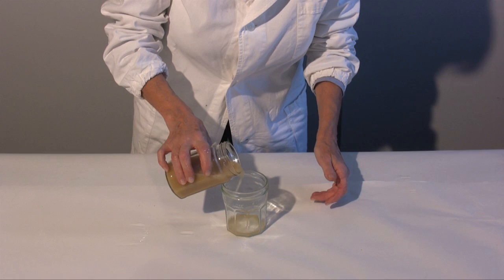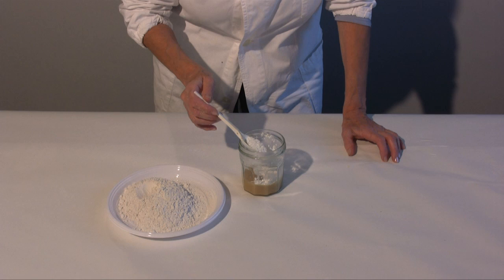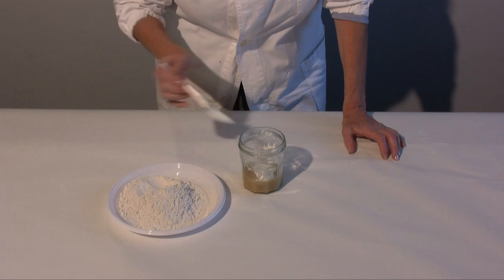I now transfer the amount of glue I need in another container. I add the plaster to the glue. I place a spoonful of plaster at a time without forgetting to constantly stir to avoid small air bubbles from forming.